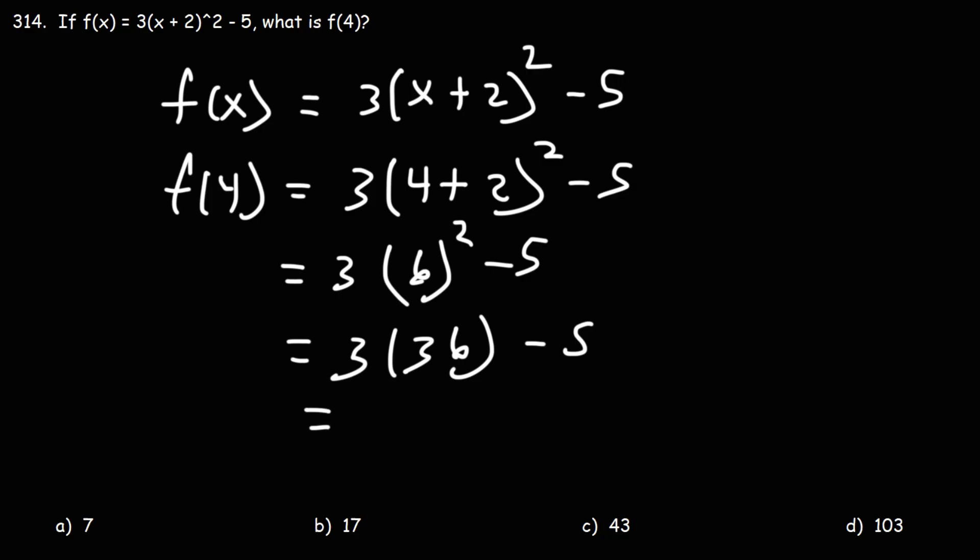3 times 36. 3 times 30 is 90, 3 times 6 is 18. 90 plus 18 is 108. And 108 minus 5 is 103.